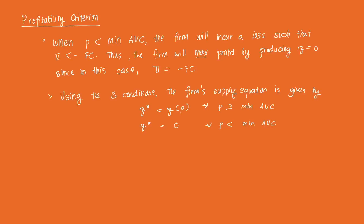When the price in the market, since firms take price as given in perfect competition, is less than the minimum average variable cost, the firm will incur a loss such that profit is less than negative fixed cost. Thus, the firm will maximize profit by producing Q equal to zero, since in this case the profit is just negative fixed cost.